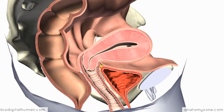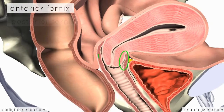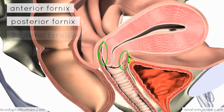On this cross-sectional model, you can see the dome-shaped cervix protruding into the vagina. By protruding in this way, the cervix creates recesses around it — anteriorly you've got one recess, and posteriorly you've got another, where the cervix meets the vaginal wall. These pockets are known as the fornices. You've got an anterior fornix anteriorly, a posterior fornix behind, and two lateral fornices.